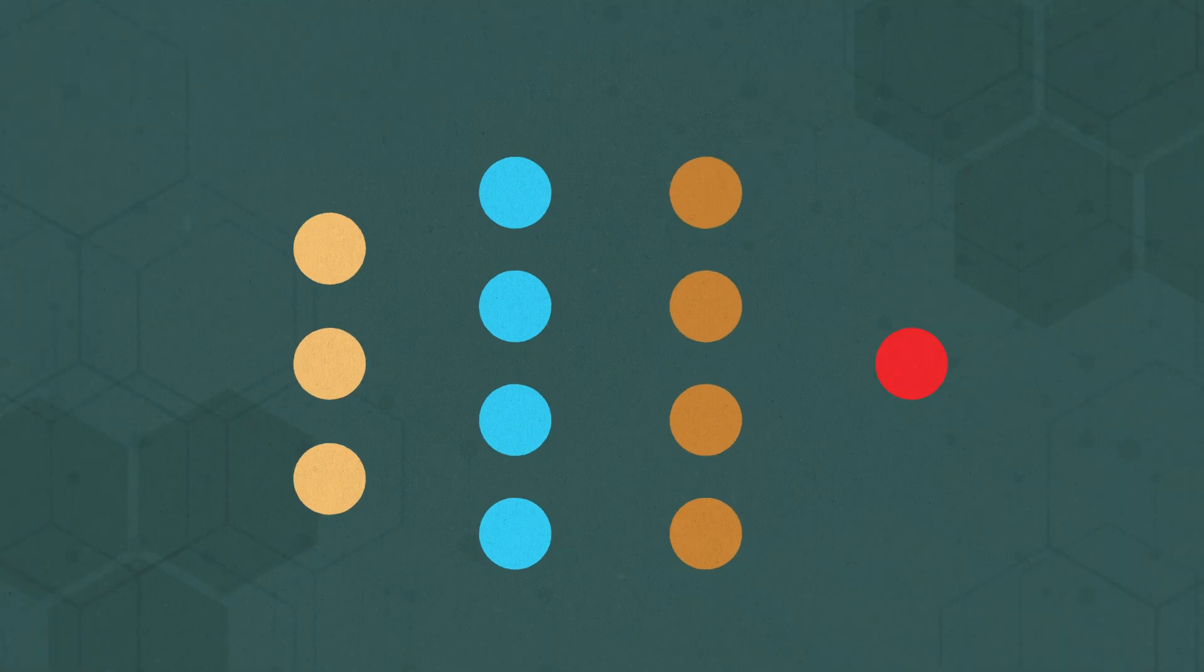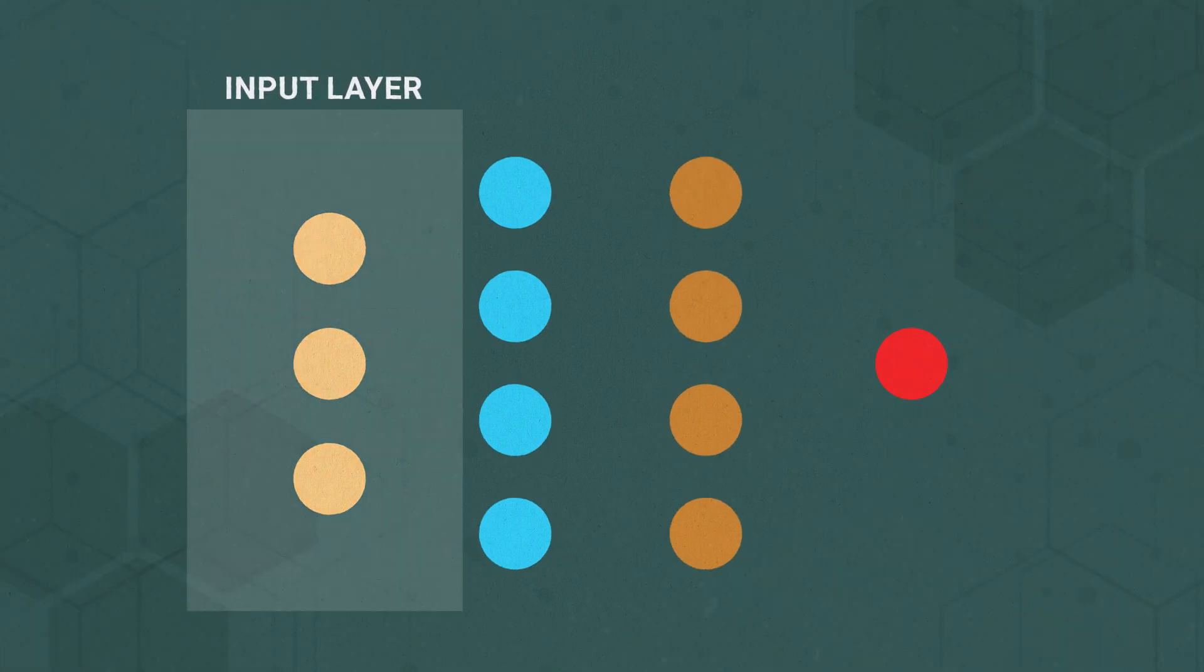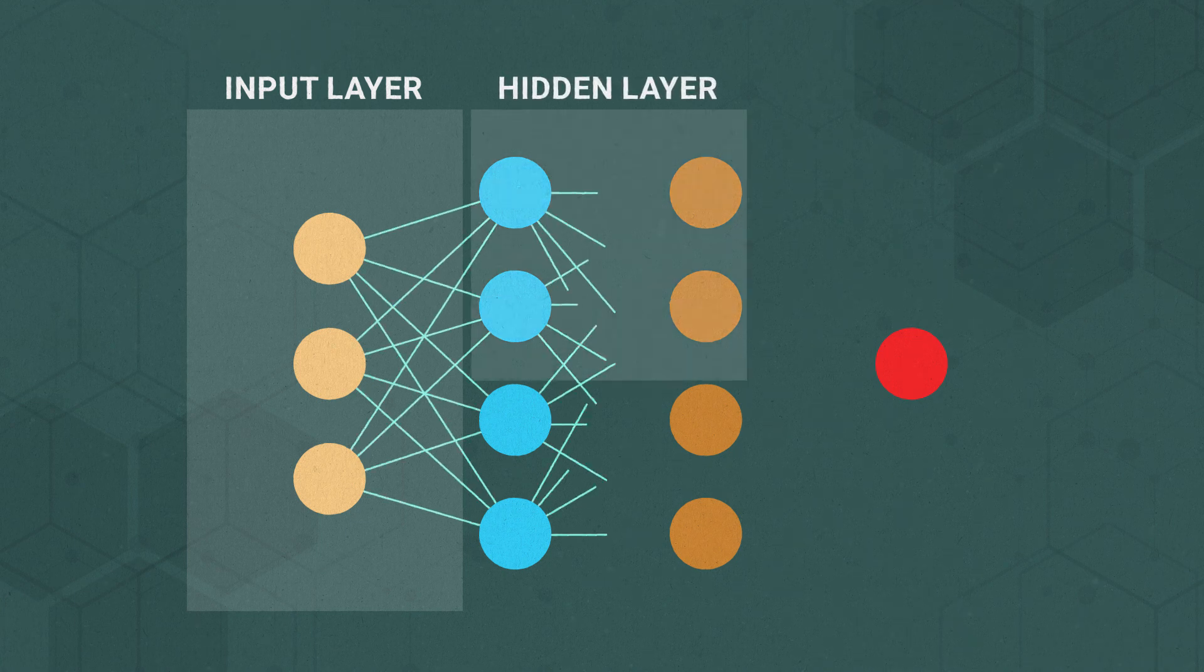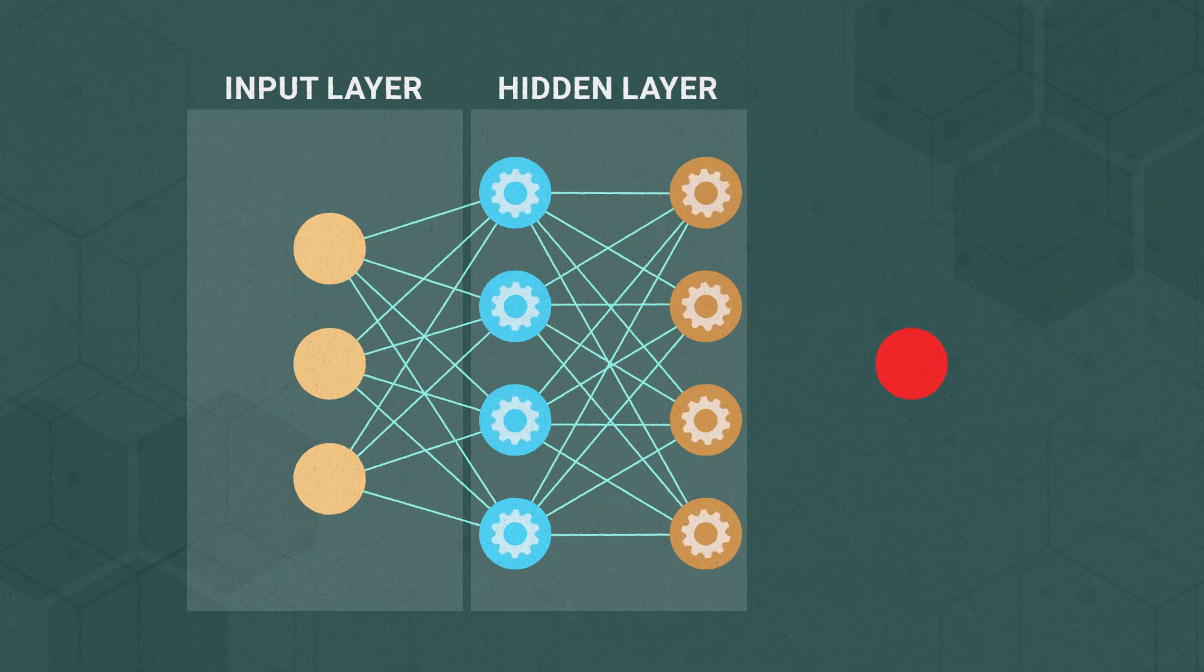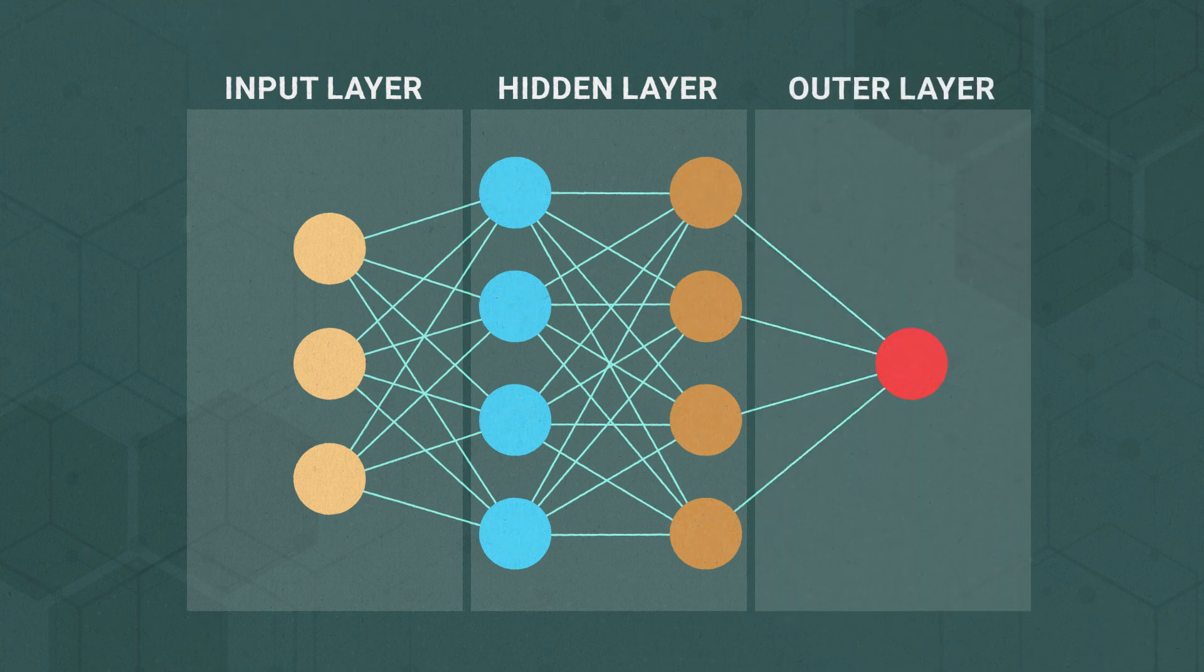Neural networks consist of processors arranged into three layers. An input layer, where the raw data first enters the system, similar to how your eyes send visual information to your brain. Hidden layers, that process the data step by step, with each layer building on the results from the one before it. And an output layer, where the final results come out, like a decision or prediction. These layers work together, passing along information in a way that mimics how neurons in the brain pass signals to each other.